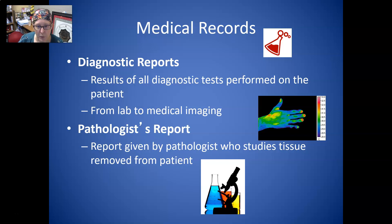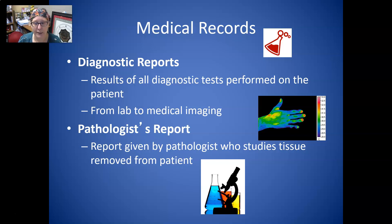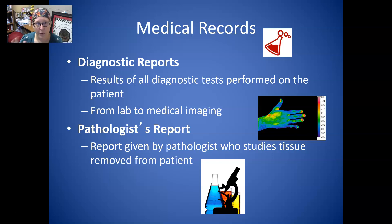The pathologist's report is given by a pathologist who studies tissue that was removed from the patient. So if there was a biopsy, a limb was amputated, or something was removed and sent for analysis, the pathologist would write up the report. It might fall under the diagnostic report and then just be a separate tab there for pathology.